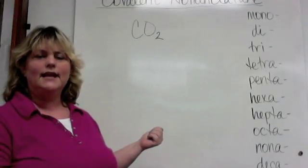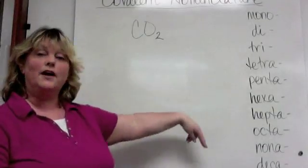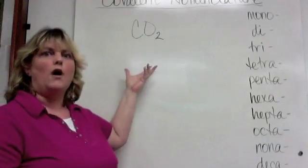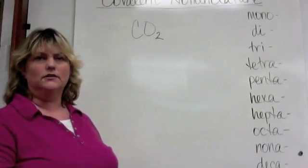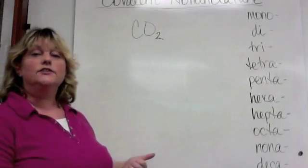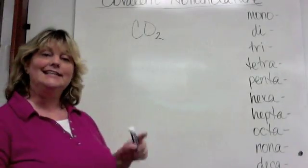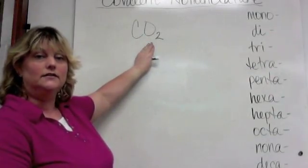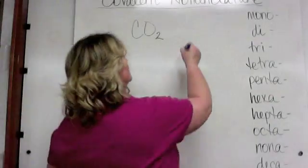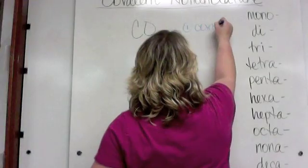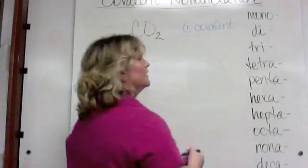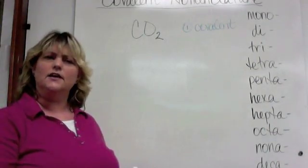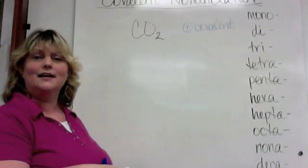Let's jump in and name one — this is one most of you probably already know, but let's follow through the rules to understand why. First question: is it ionic or covalent? I have a non-metal with a non-metal, so that makes it covalent. Knowing that, I don't need to ask the other questions, because those pertain to ionic compounds only.